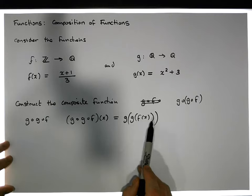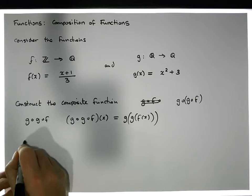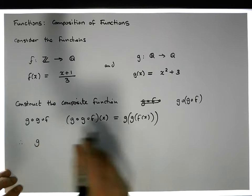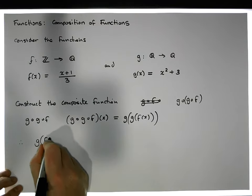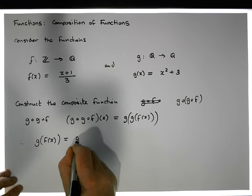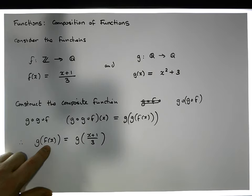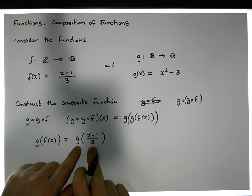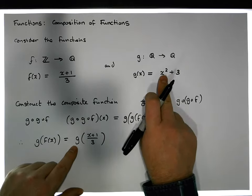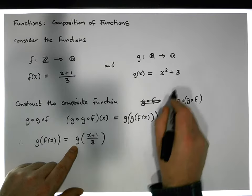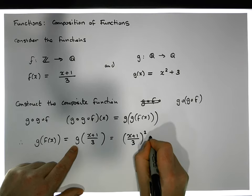Let's do the inner workings first. We know that f(x) = (x + 1)/3. So g(f(x)) = g((x + 1)/3). Now g tells us to square the input and add 3, so this becomes ((x + 1)/3)² + 3.